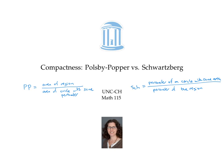In this video, we found that the Polsby-Popper score is four pi times the area of the district divided by the perimeter of the district squared. We also found a formula for the Schwartzberg score, which turns out to be the square root of the same expression. Therefore, the Schwartzberg score of a region is the square root of its Polsby-Popper score.